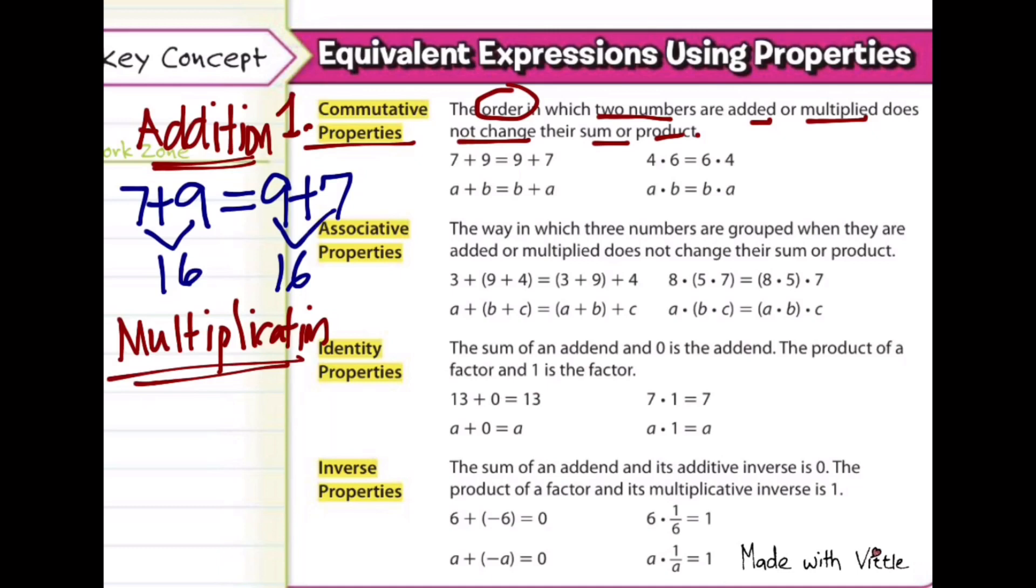So commutative property can also be applied in multiplication, such as 4 times 6 will still be equal if I switch them around with 6 times 4. It's still going to be 24 on both sides. So the order in adding two numbers or multiplying two numbers is not really important because we're still going to have the same sum or product.